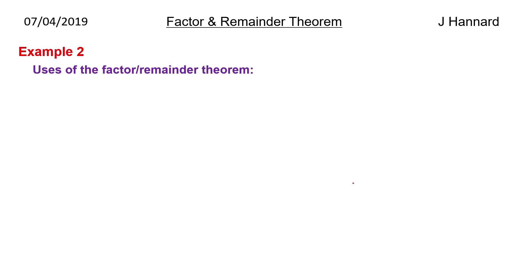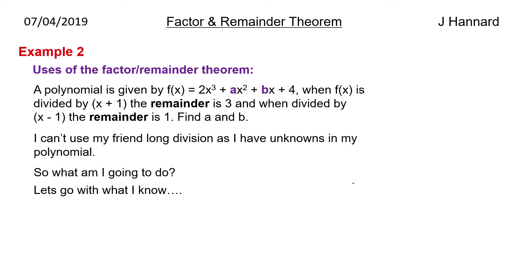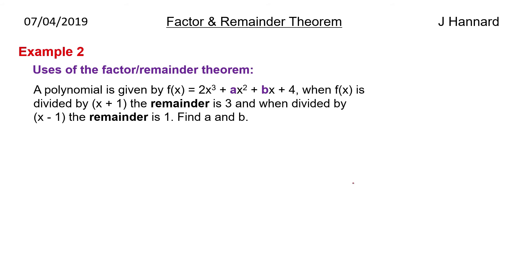So the use of the factor slash remainder theorem. A polynomial is given by f of x is equal to 2x cubed plus ax squared plus bx plus 4. When f of x is divided by x plus 1, the remainder is 3. And when divided by x minus 1, the remainder is 1. Find a and b. So you might be thinking, what on earth do we do here? We can't use long division because we don't know what a and b are. So what are we going to do? Well, let's go with what we know. So we know that when it's divided by x plus 1, the remainder is 3. And we also know that when it's divided by x minus 1, the remainder is 1. So what I would do here is split your page in 2, stick your functions on the left and right hand side there.